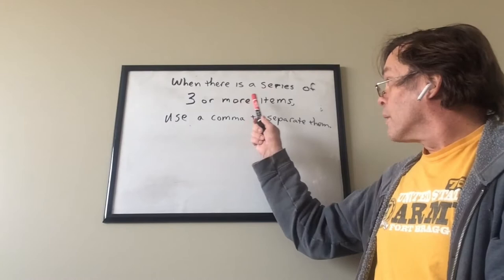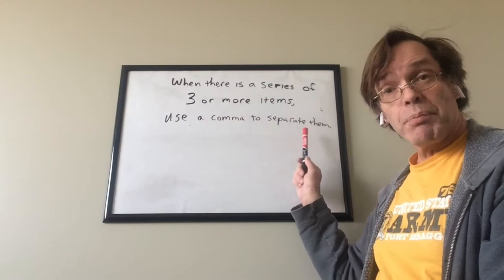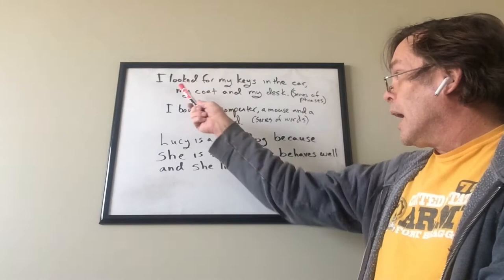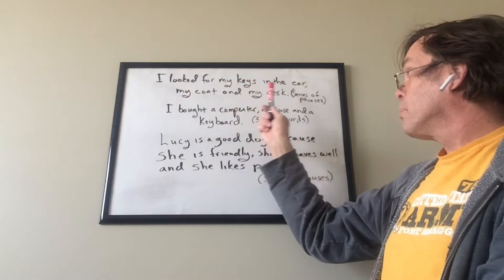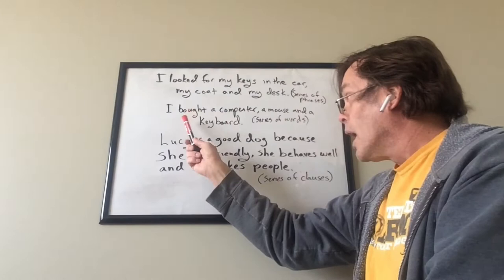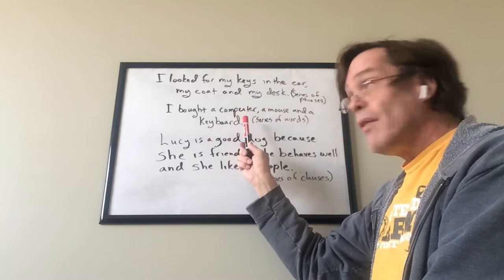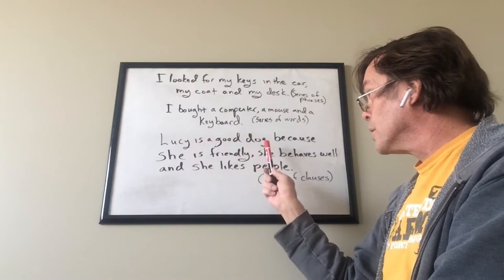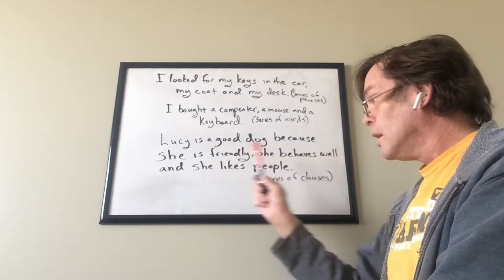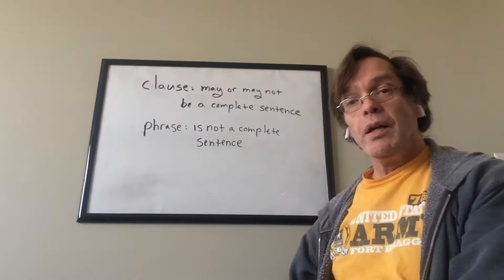Another way to use commas: when there is a series of three or more items, use a comma to separate them. Here are three examples. First, a series of phrases: 'I looked for my keys in the car, my coat, and my desk.' Second, a series of words: 'I bought a computer, a mouse, and a keyboard.' Third, a series of clauses: 'Lucy is a good dog because she is friendly, she behaves well, and she likes people.'